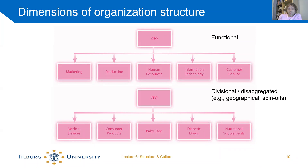The other type of departmentalization is a divisional structure, where you split the organization into separate divisions based on some dimension, with separate units for each. For example, a medical company might have divisions for medical devices, consumer products, baby care, and diabetic drugs — those are the divisions of the organization.